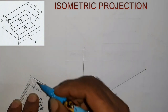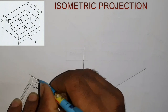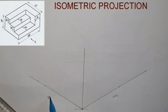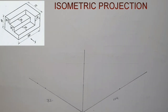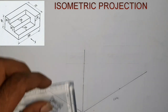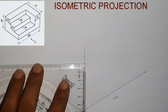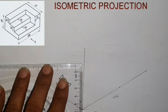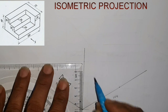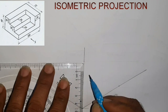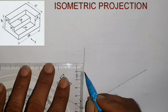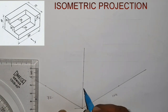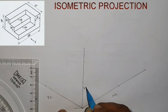Now we can draw the 3 dimensions of the object: the front view, side view, and height.